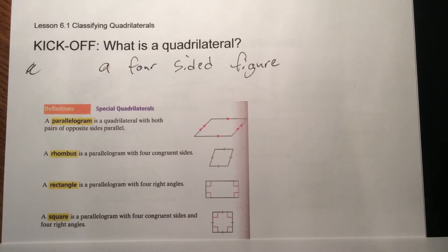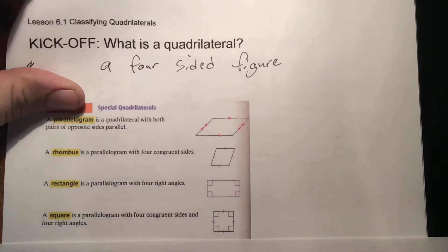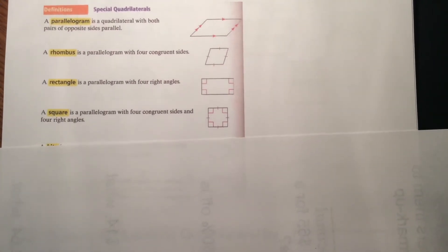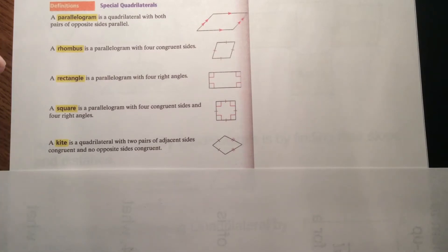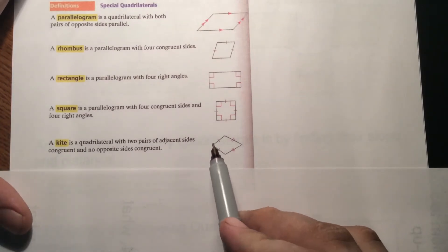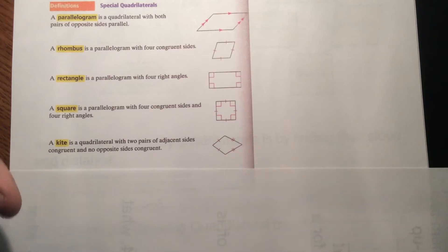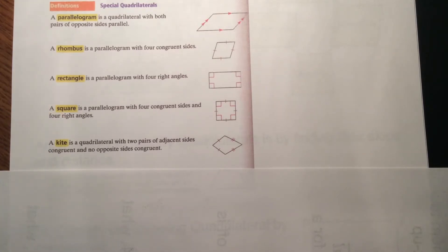So a square is essentially a rhombus and a rectangle combined. A kite — not just something you go fly — is a quadrilateral where there are two pairs of adjacent sides that are congruent. The sides next to each other are congruent, but opposite sides are not congruent and the sides are not parallel.